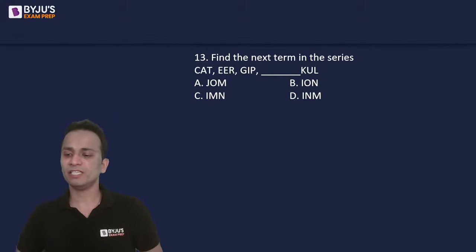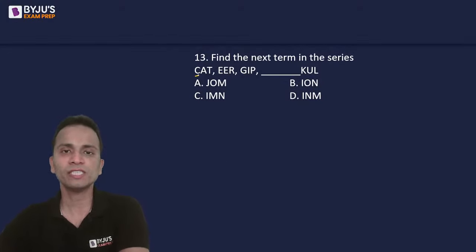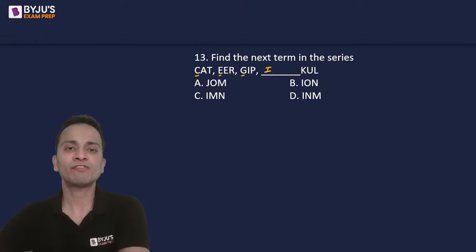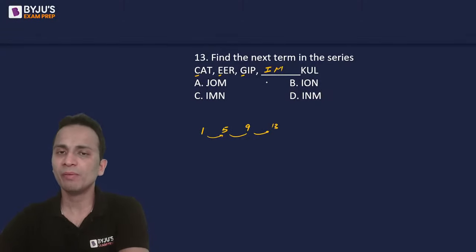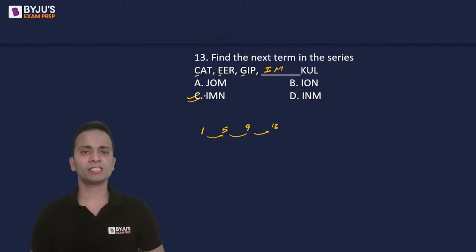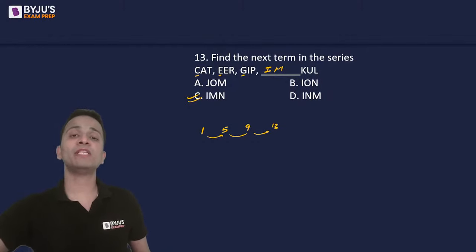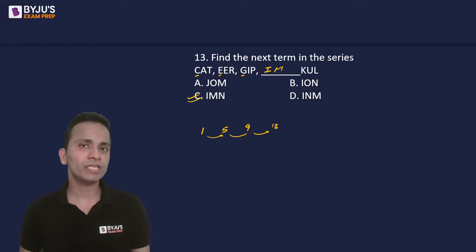The last question of slot 1 asks to find the next term in the given series: C, A, T, E, E, R, G, I, P... The first letters C, E, G, I follow a pattern of skipping one letter each time, so next starts with I. The second letters A, E, I follow a +4 pattern (A=1, E=5, I=9), so next is M (13). Only one option starts with I, M. The correct answer is option C. These were the 13 analytical reasoning questions from the logical reasoning section of CMAT 2023 slot number 1.